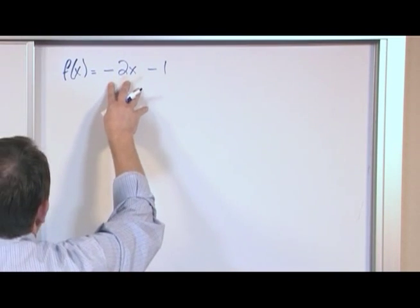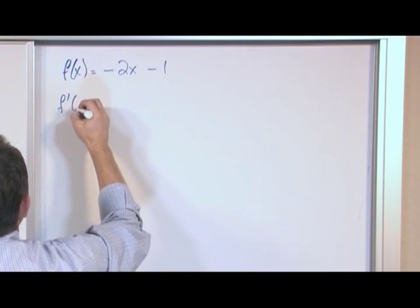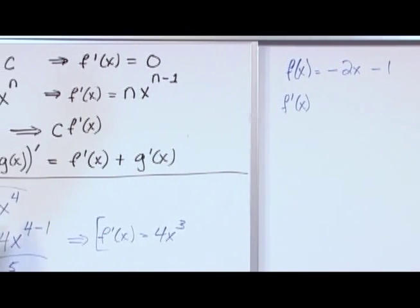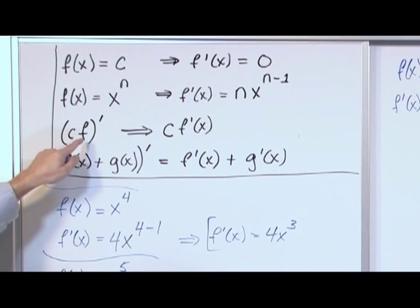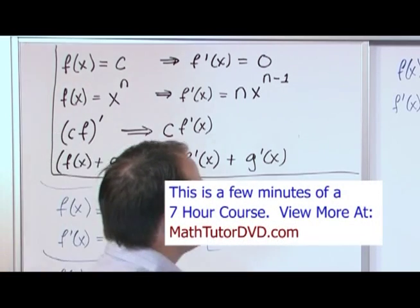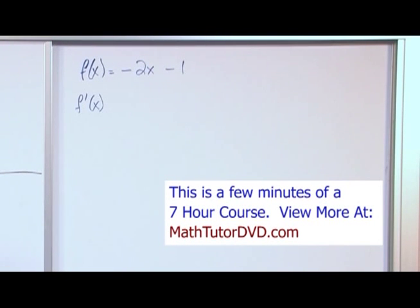The derivative of the first part, we have to do a little bit of thinking about here. So let's go f'(x). What do we have? Negative 2x. So if we go over here, this is a constant times a function, the function being x, the constant being the negative 2 out in front. So the way we handle it is just like it says here. We just take the constant out in front, and then we take the derivative of the function.